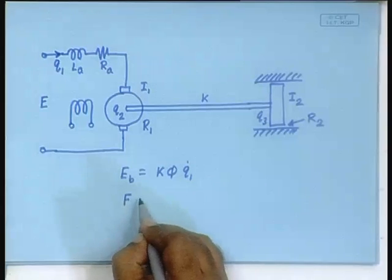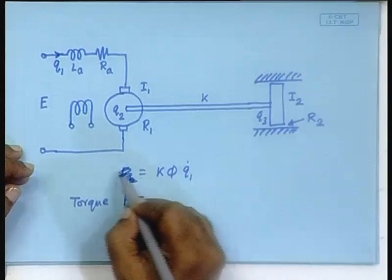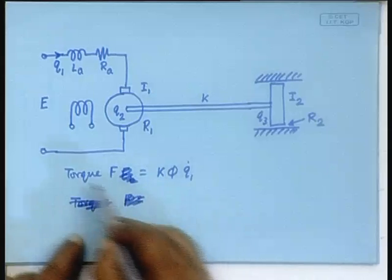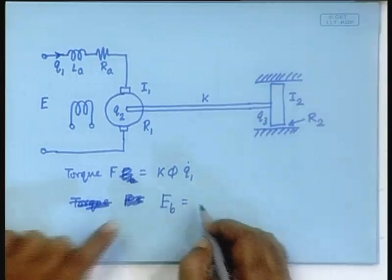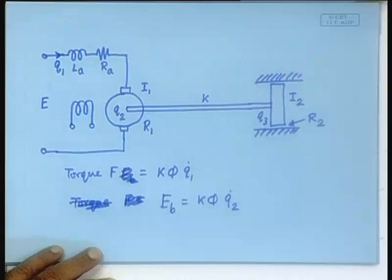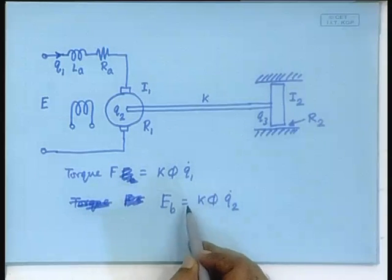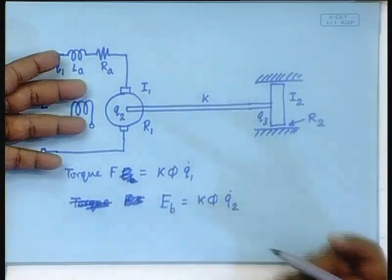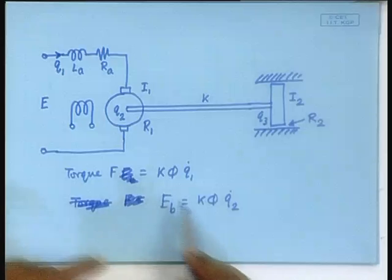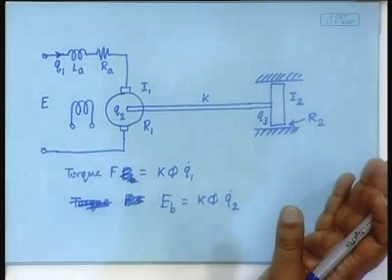The back EMF e_b is K·φ·Q₁-dot, and the torque F is K·φ·I_a. These two K·φ's are in fact the same — if you assume the power input equals power output (ignoring losses), they are equal. These are the relationships describing the interaction between the mechanical subsystem and the electrical subsystem.